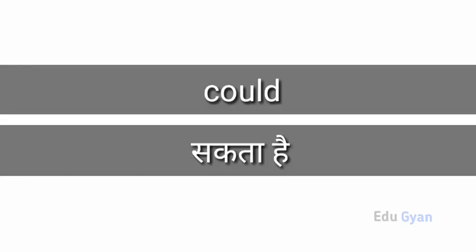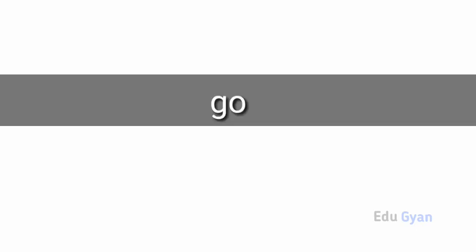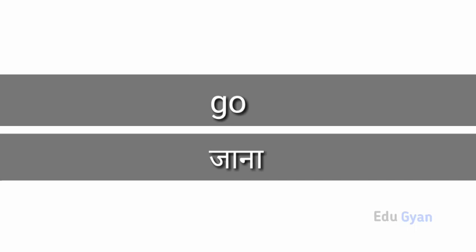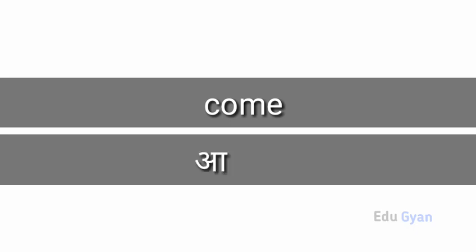Could means saktahe. Go means jana. Come means aana.